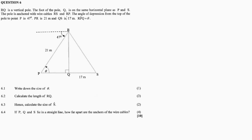The angle of depression from the pole to point P, R to P, is 47 degrees. PR is 21 meters, and QS is 17 meters long. And then angle theta is RPQ — this angle here. Now, with 6.1, write down the size of theta. Check out this dotted line, which I can also know as PQ.